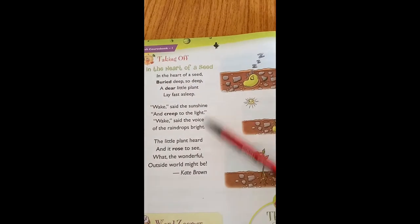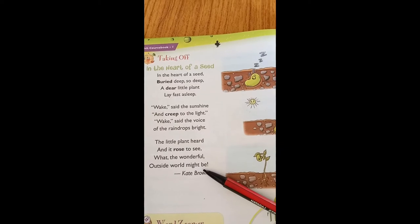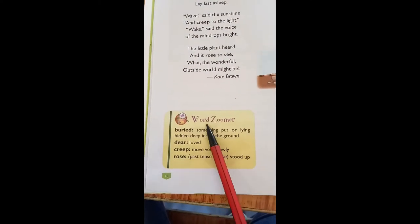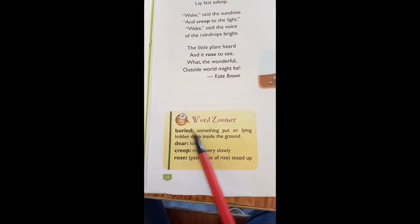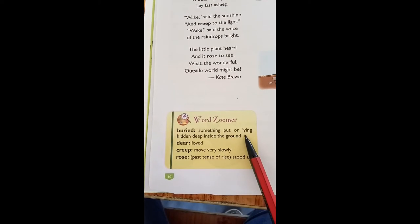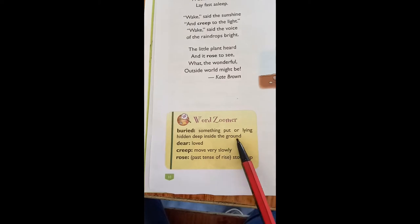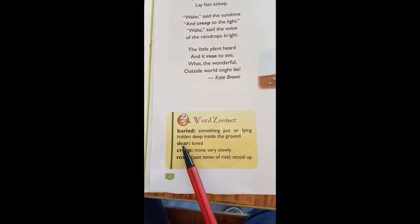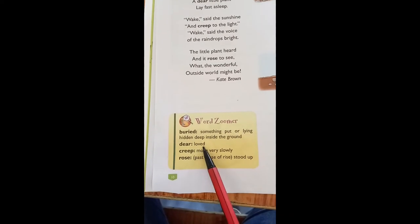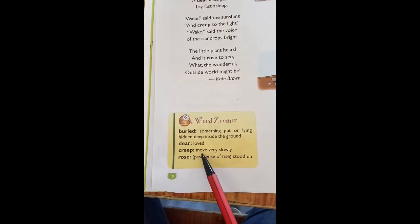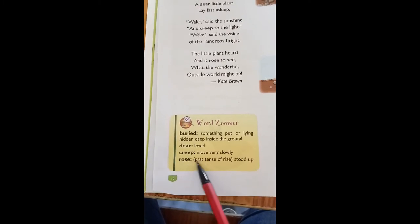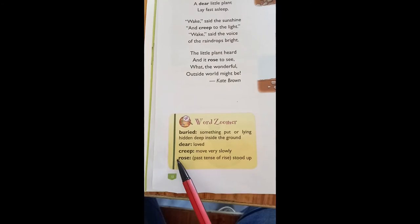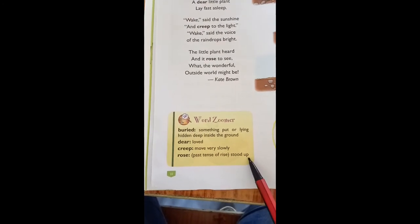Now students, you know how to read this poem and you know what is the meaning of this poem. Now look at here — here is the word zoomer. Buried means something put or laying hidden deep inside the ground. Next one is dear — dear means loved. Next one is creep — creep means move very slowly. And the last one is rose — rose is the past tense of rise, and it means stood up.